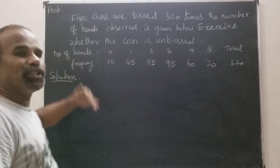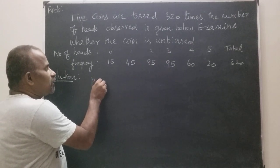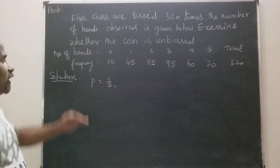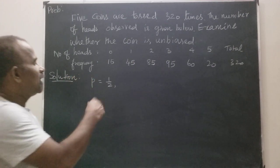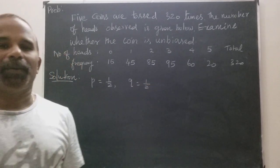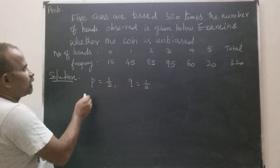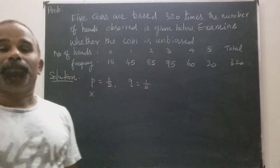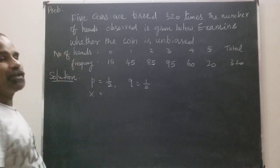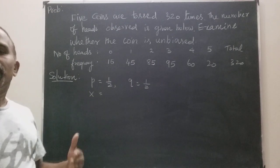When tossing a coin, the probability of getting a head is equal to 1/2 — this is the probability of success. And the probability of failure is also equal to 1/2. Let x be a random variable; x is assigned to be the number of heads.